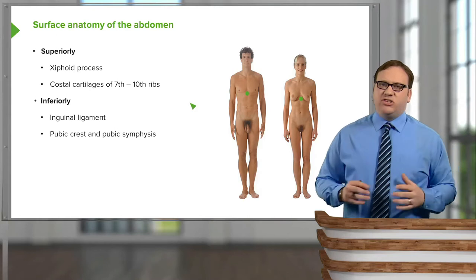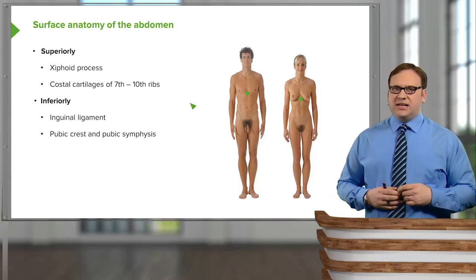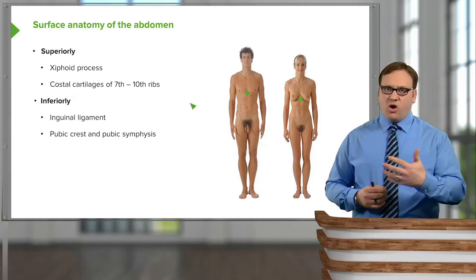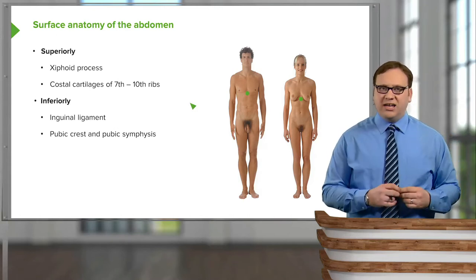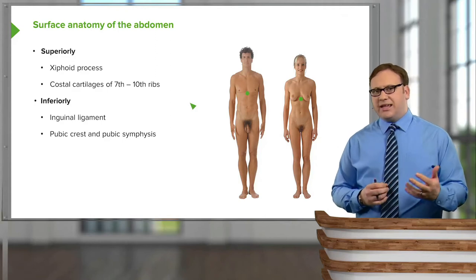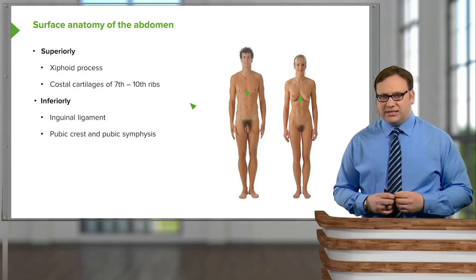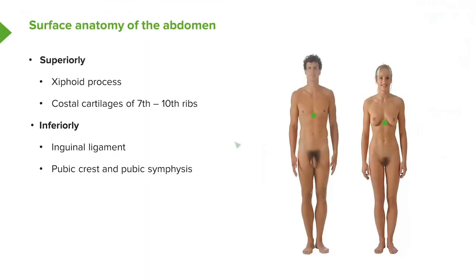Radiating laterally away from this process, we have the costal cartilages of ribs 7, 8, 9, and 10. These radiate away in this direction in both the male and the female, and this marks the superior boundary of the abdomen.